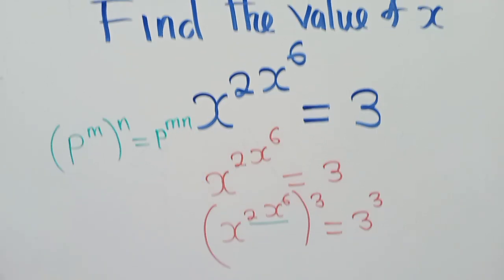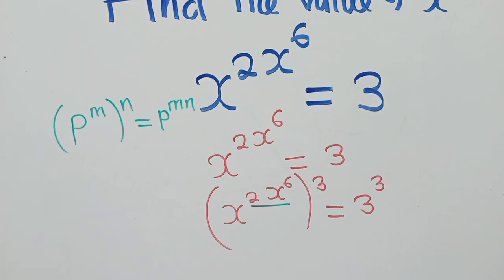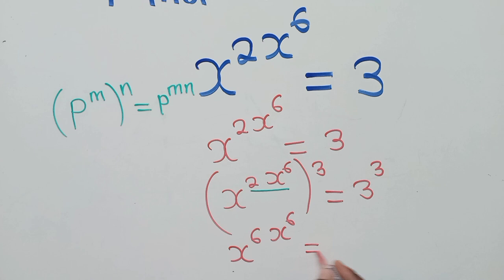And we are going to get x power 6, because this 2 and 3 will be multiplied, which will be equal to 3 power 3.